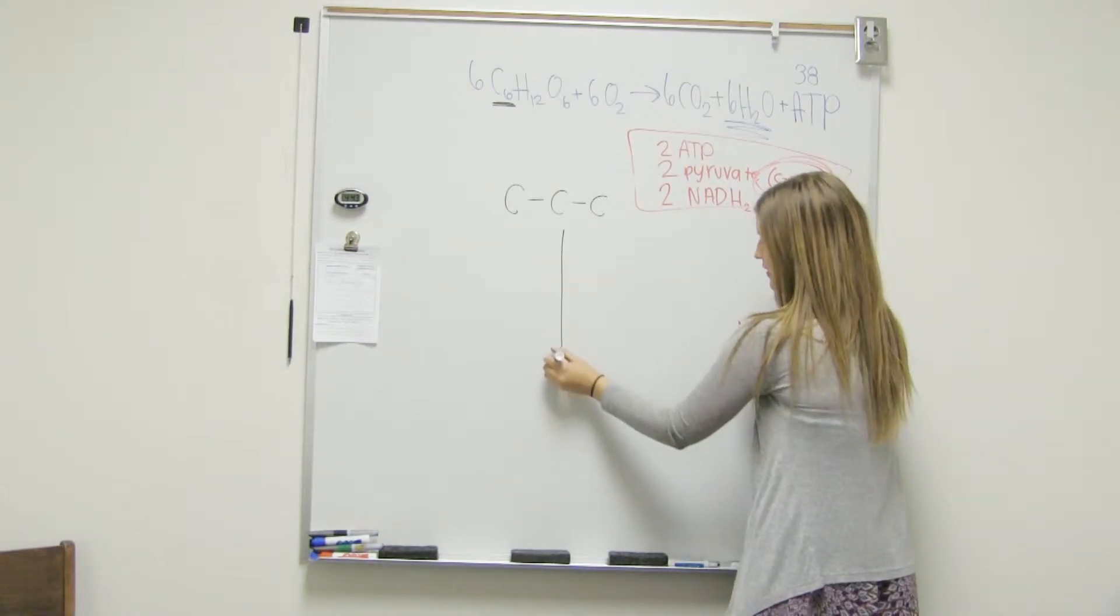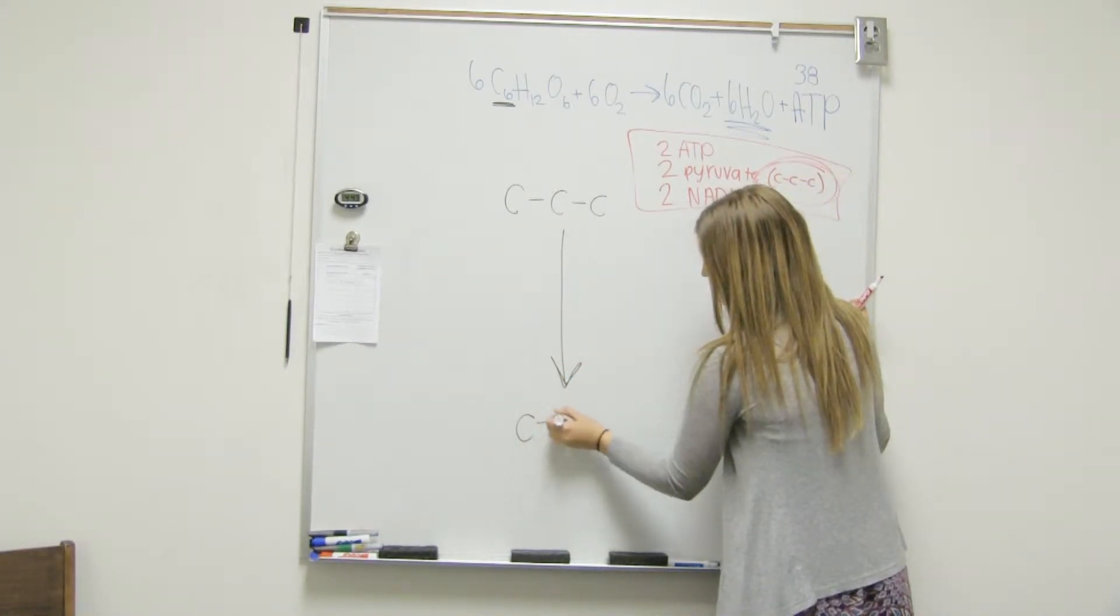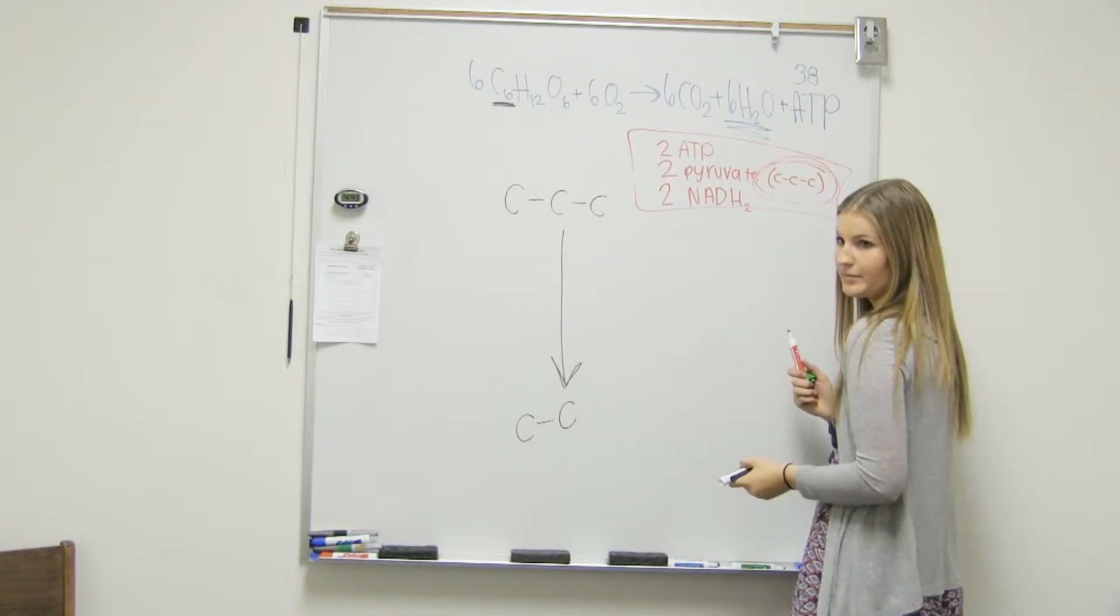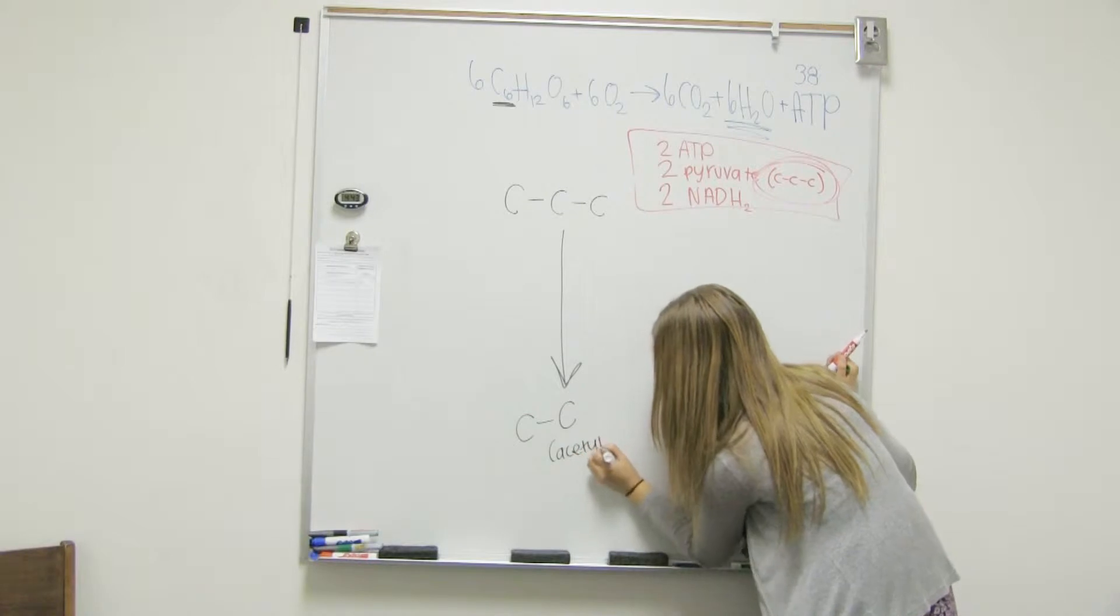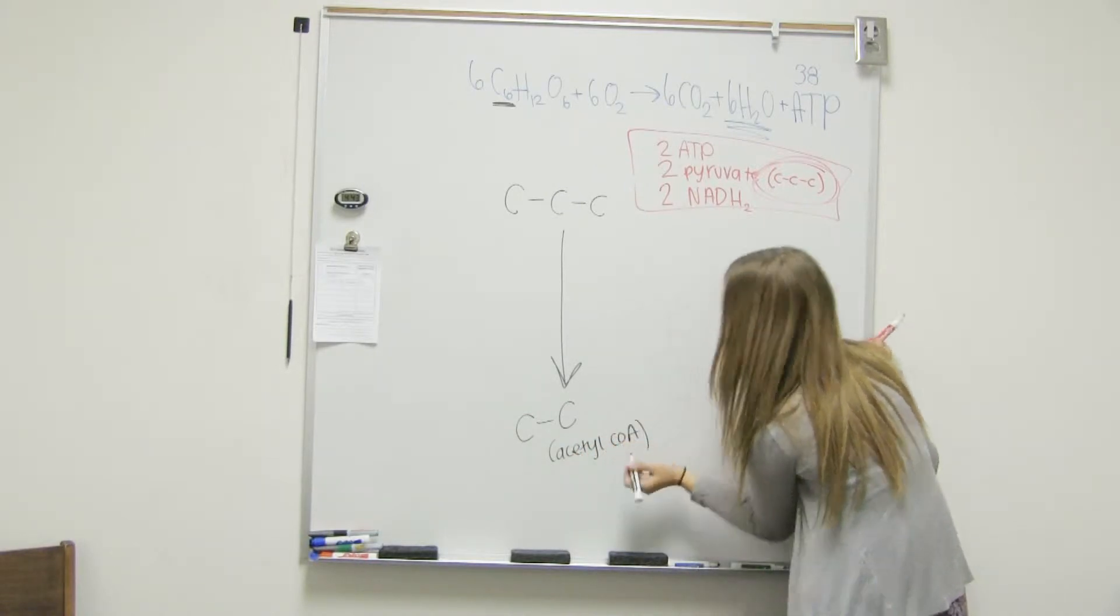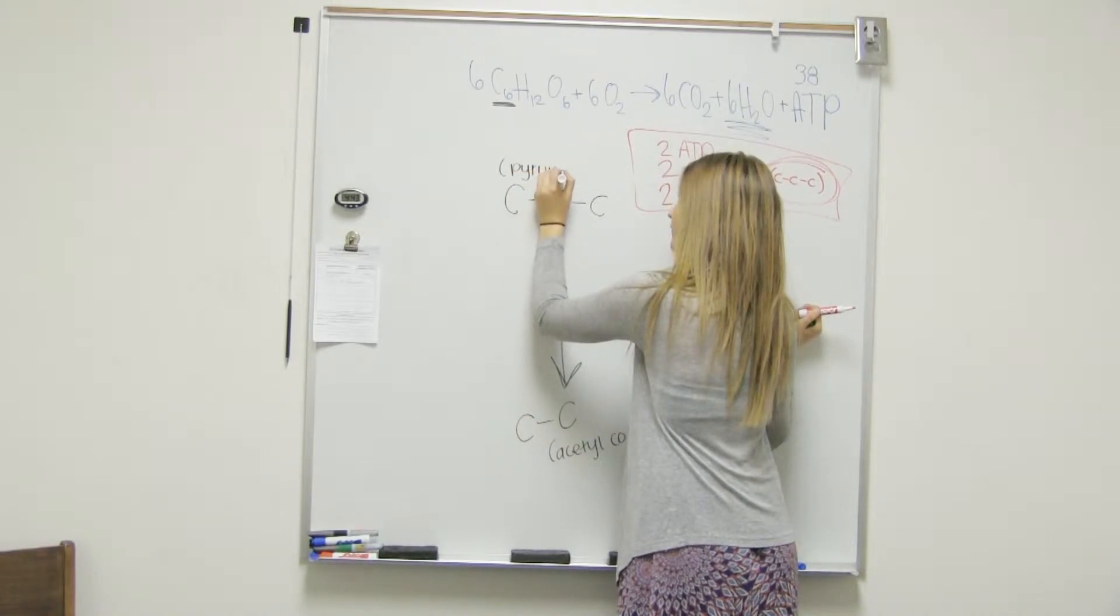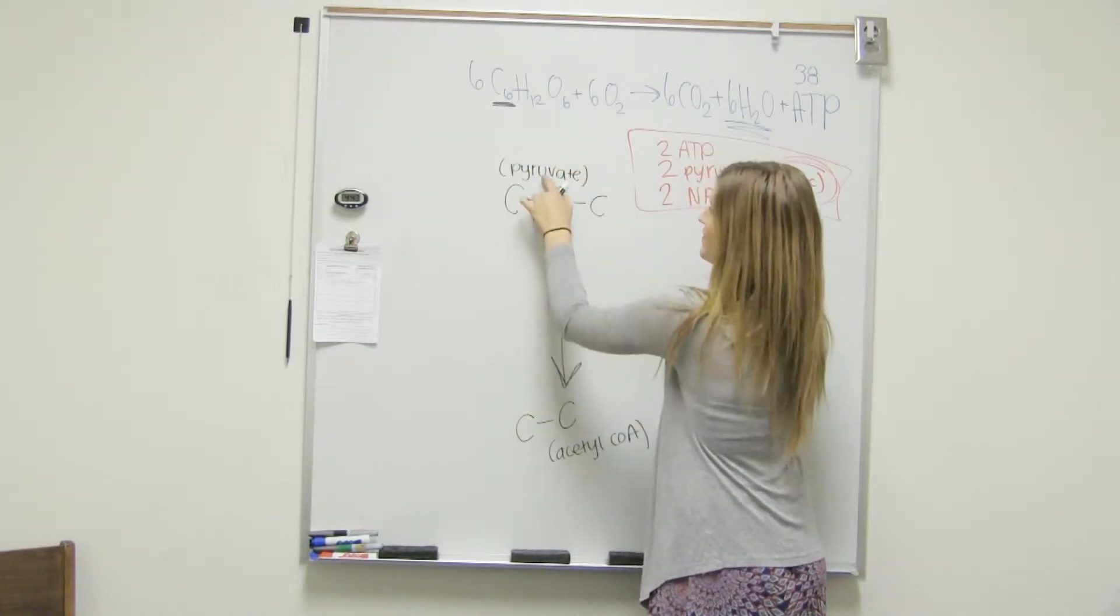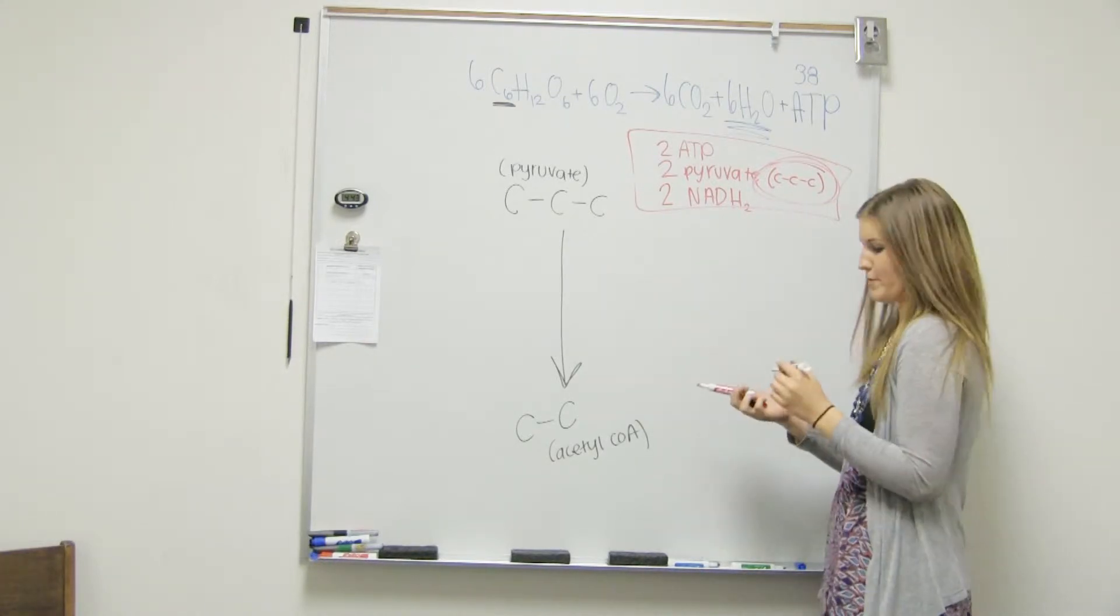And our goal is to make acetyl-CoA. What does acetyl-CoA look like? Two-carbon molecule. There's acetyl-CoA. So here's acetyl-CoA, and this is pyruvate. All my V's and U's are the exact same. There's acetyl-CoA formation.